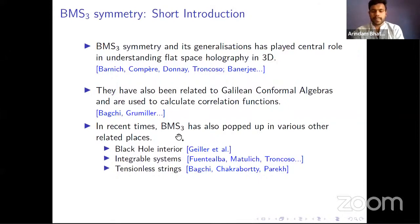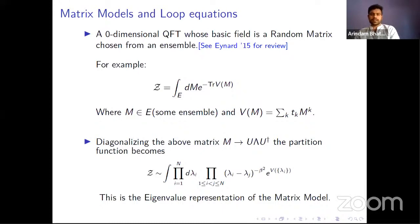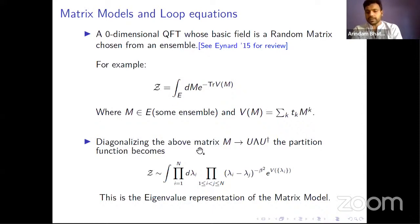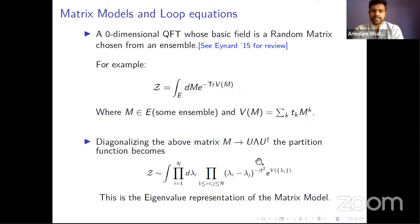Understanding BMS3 symmetry more deeply is a very interesting question. On the other side are matrix models, which are zero-dimensional quantum field theories whose basic field is a random matrix. The partition function integrates over some ensemble E, where the integration variables are all the elements of the matrix, and the action is essentially an effective potential — a polynomial in these matrices. Particularly useful is the eigenvalue representation, where you diagonalize the matrices and write the partition function in terms of eigenvalues. The Jacobian appears as a Vandermonde determinant with some exponent beta, giving a beta-matrix model.